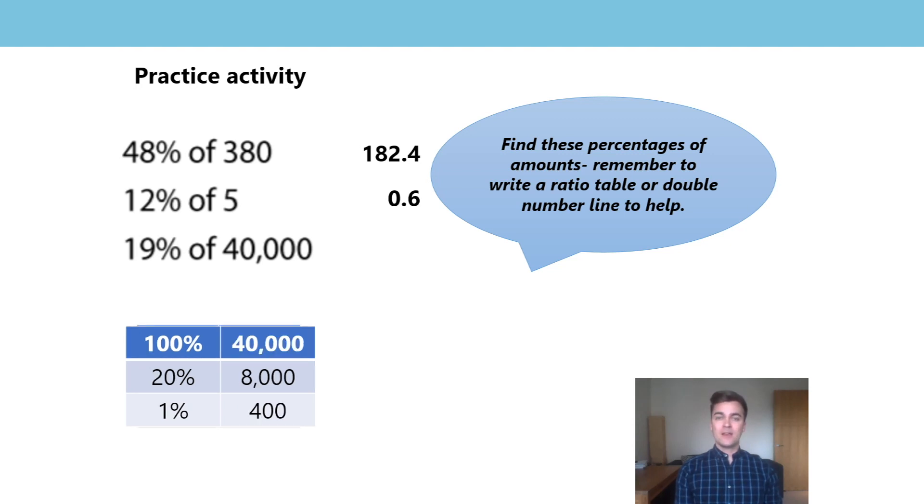The final one, I found 20%, I found 1% and I subtracted the 1% from 20% to give me 19% of 40,000, 7,600. Again, for this one, was that the approach you took or was it a different one for you? It doesn't matter if the solutions are the same.